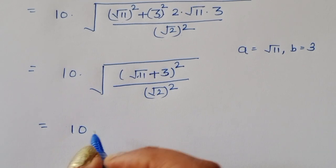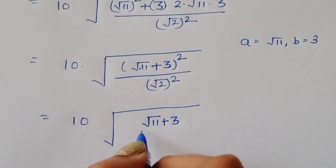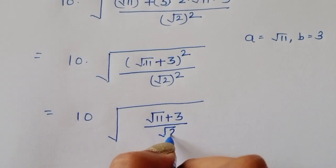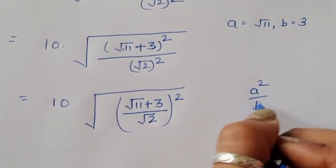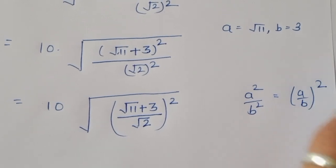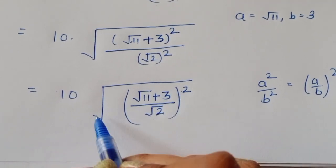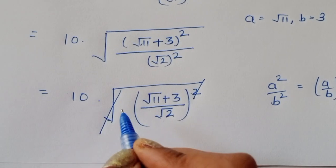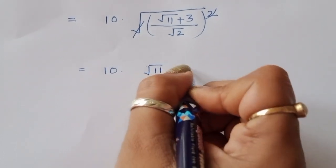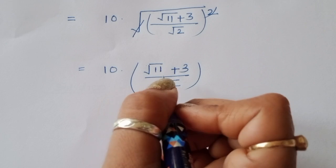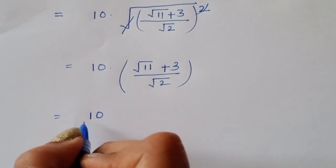Using the formula a²/b² equals (a/b)², this becomes 10 times √[(√11 plus 3)² divided by (√2)²], which equals 10 times (√11 plus 3) divided by √2. The square cancels with the square root to give us this value.